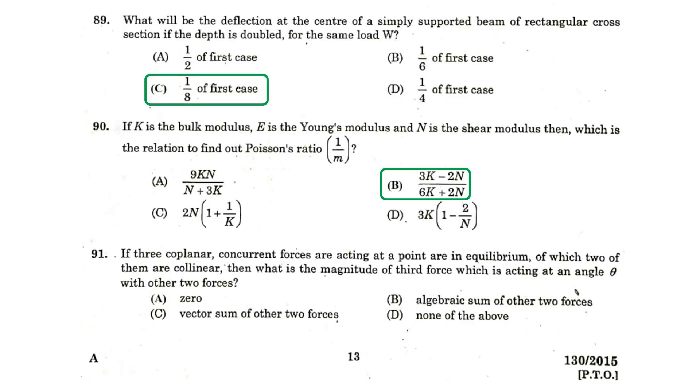If three coplanar concurrent forces are acting at a point are in equilibrium, of which two of them are collinear, then what is the magnitude of third force which is acting at an angle theta with other two forces? Zero.